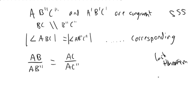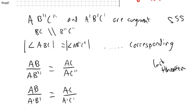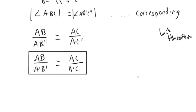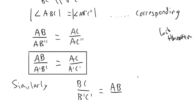Similarly, you can say that AB over A'B' is equal to AC over A'C', because AB'' equals A'B' and AC'' equals A'C' from the construction. And similarly then, BC over B'C' is equal to AB over A'B', which pretty much completes the proof.